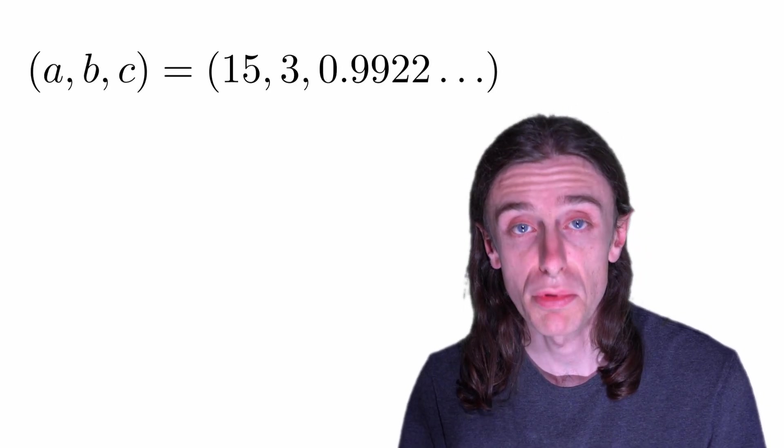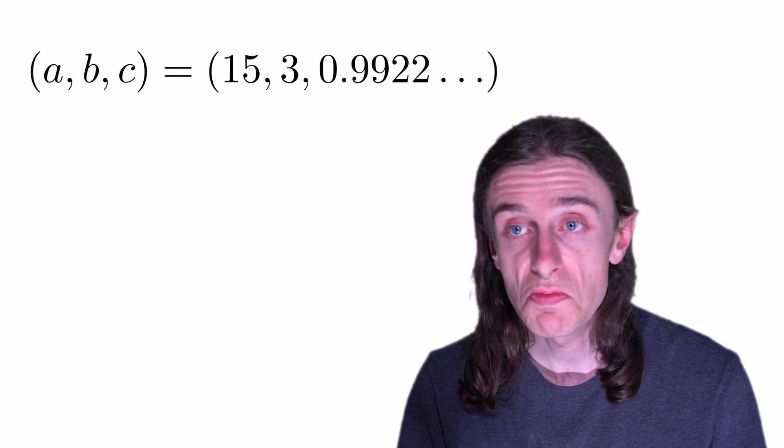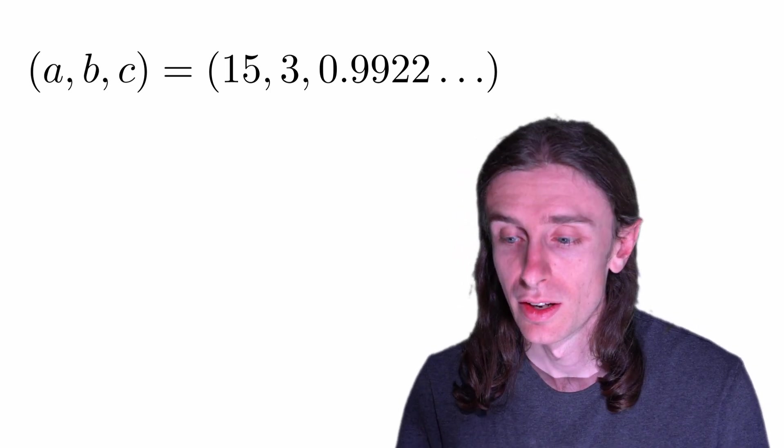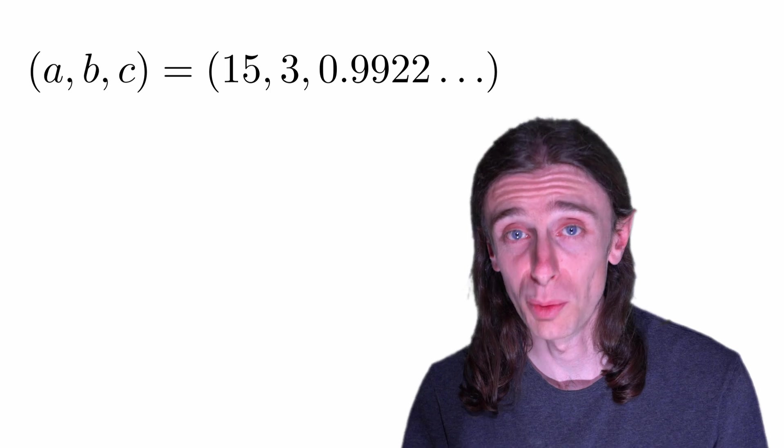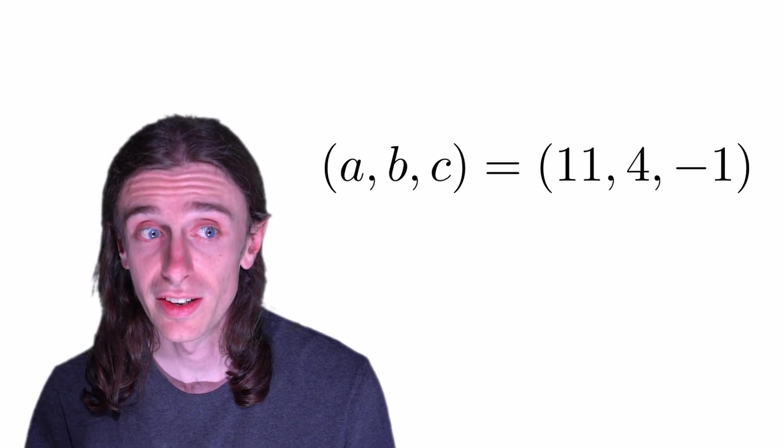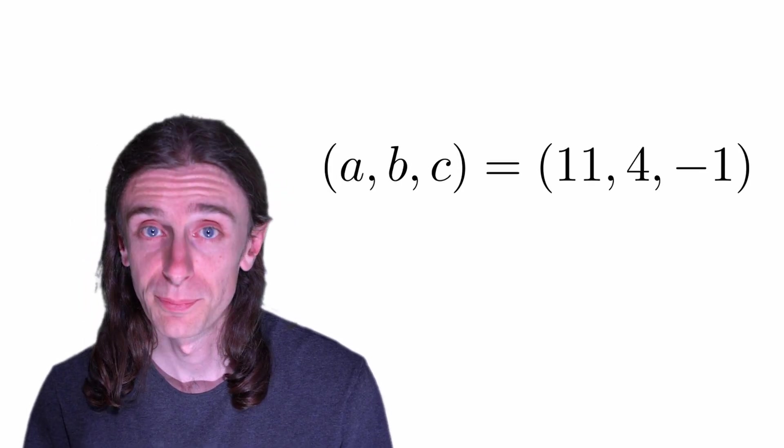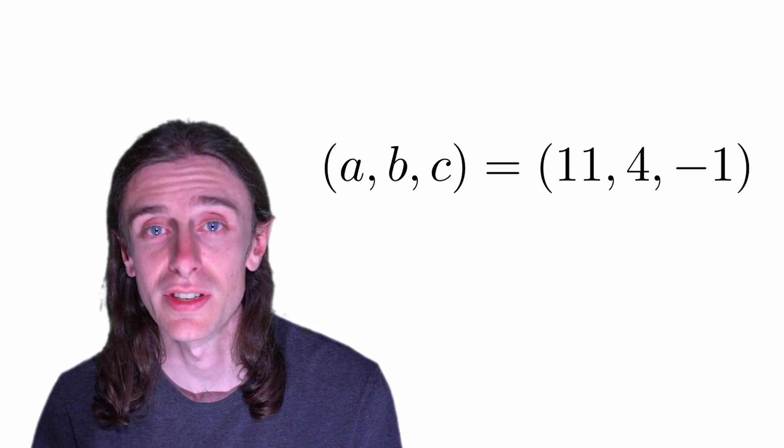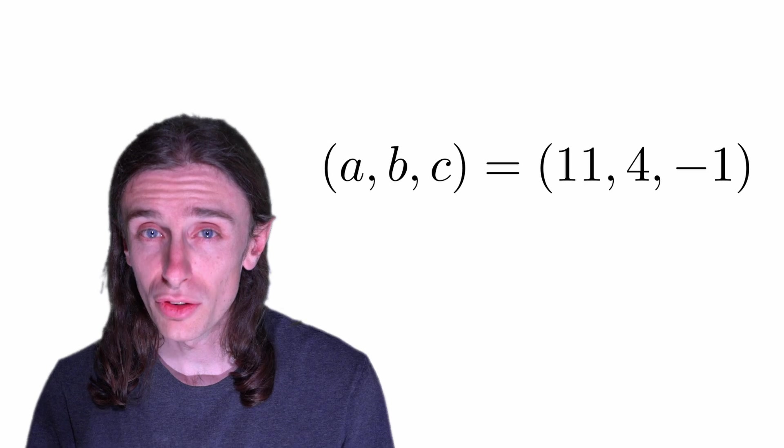Solutions without the integer requirement are easy, so for example, you might have 15 apples, three bananas, and 0.9922 something something clementines, but a number theorist is not happy with a one percent error. Or you might find that just trying a few small numbers, you could get 11 apples, four bananas, and minus one clementine,